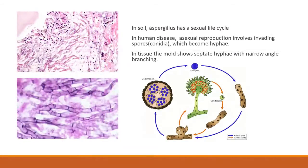In soil, where it naturally grows, aspergillus has a sexual life cycle. However, in human disease, it basically involves asexual reproduction — the aspergillium making conidia spores, which when inhaled become hyphae. Remember that in tissue biopsies, the hyphae are very septated and the branching is at a narrow angle, which they seem to love to ask on exams.